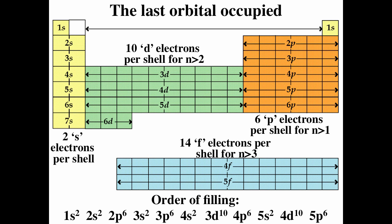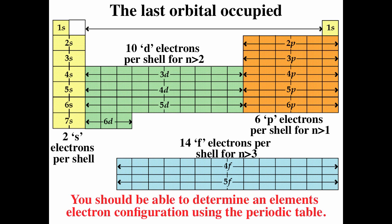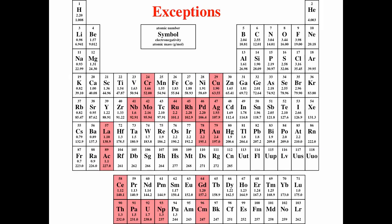The typical order of filling goes: 1s2, 2s2, 2p6, 3s2, 3p6, 4s2, 3d10, 4p6, 5s2, 4d10, 5p6. Using the periodic table, you should be able to determine the electron configuration for any element. There are exceptions to this order of filling — those are noted in red.